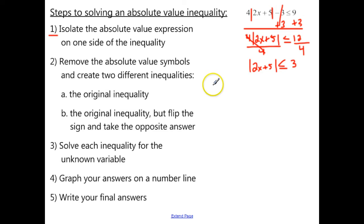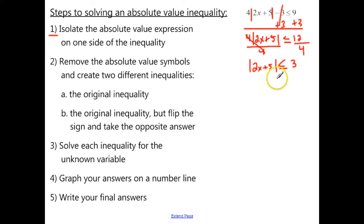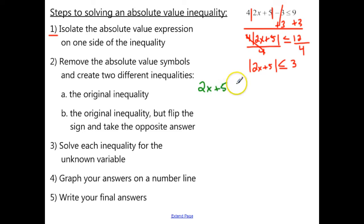Moving on to step 2: we need to remove the absolute value symbols and create two different inequalities, just like what we did with the equations. The first one is going to be the original inequality: 2x plus 5 without absolute values, less than or equal to 3.